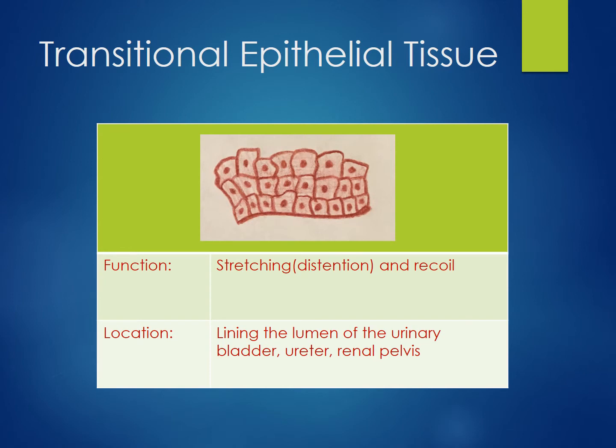Transitional epithelium is stratified and has a unique characteristic of being able to stretch and recoil. This property makes the tissue extremely important when lining things such as the urinary bladder. When the bladder is empty, the cells will be condensed. As the bladder becomes full, cells will expand.